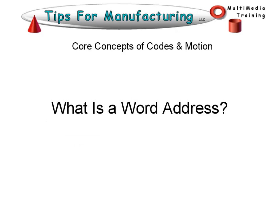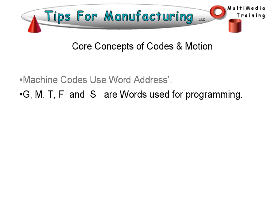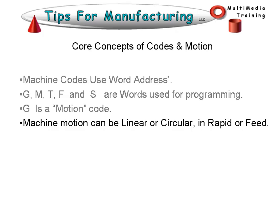What is a word address? Machine codes use word addresses. G, M, T, F, and S are words used for CNC programming. G is a motion code. Machine motion can be linear, circular, in rapid, or in feed.